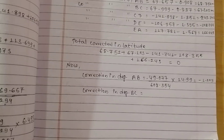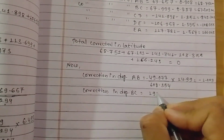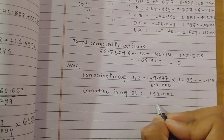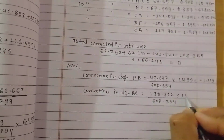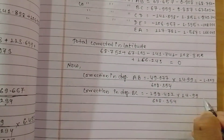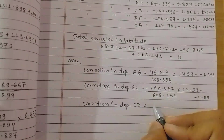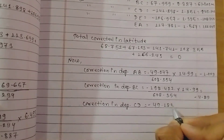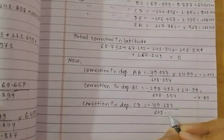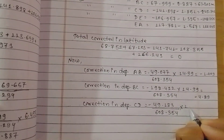Correction in departure for BC: BC length is 98.422. Divided by total sum of latitudes: 608.354, multiplied by total error 14.99. Correction in departure for CD: length is 49.183, divided by total sum 608.354, multiplied by departure error 14.99.